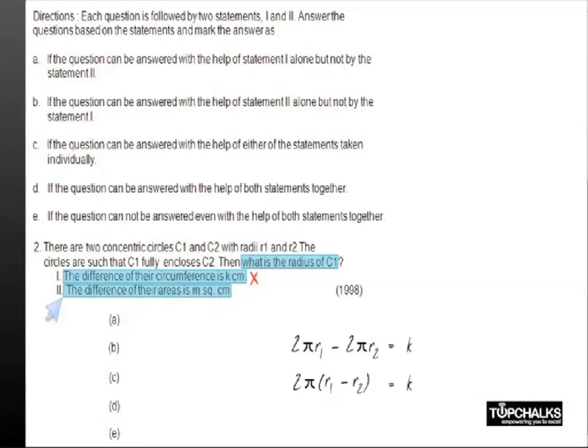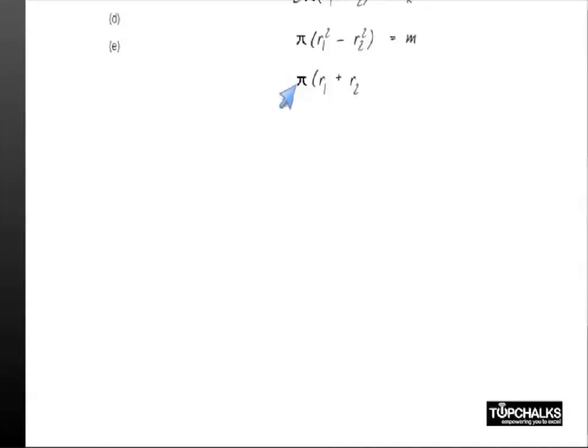difference in the areas is m square centimeters, so πr1² - πr2² = m, so π(r1 + r2)(r1 - r2) = m. Independently, it does not give me the